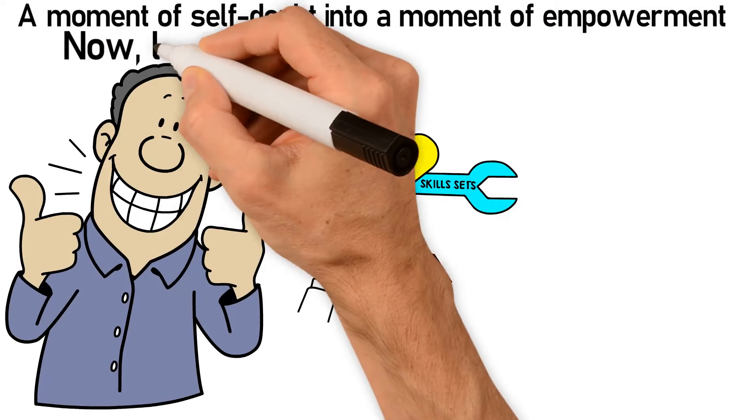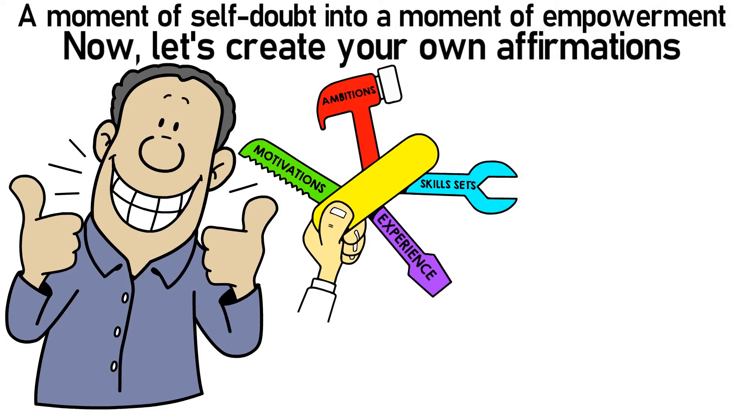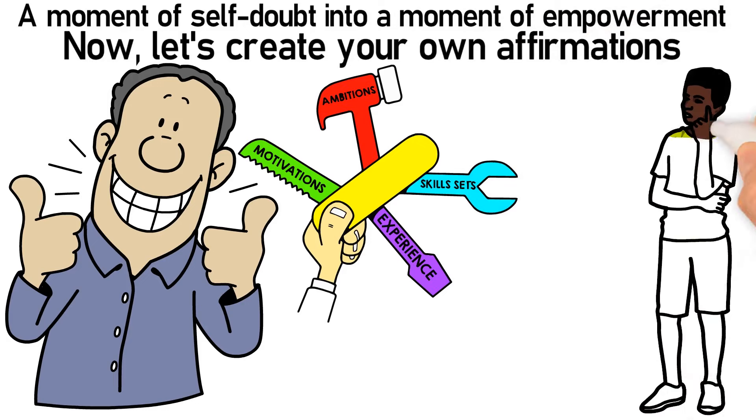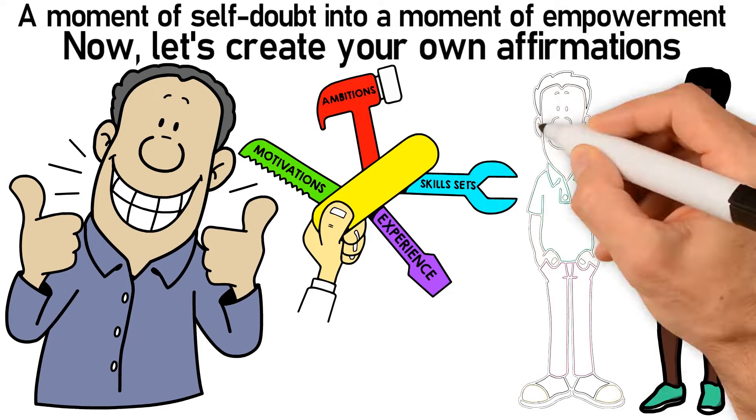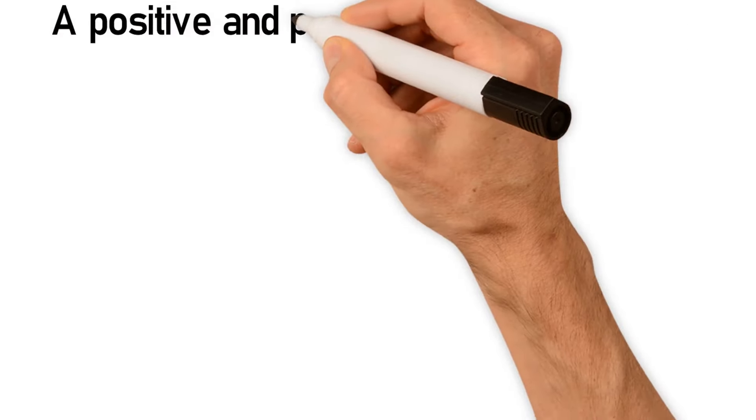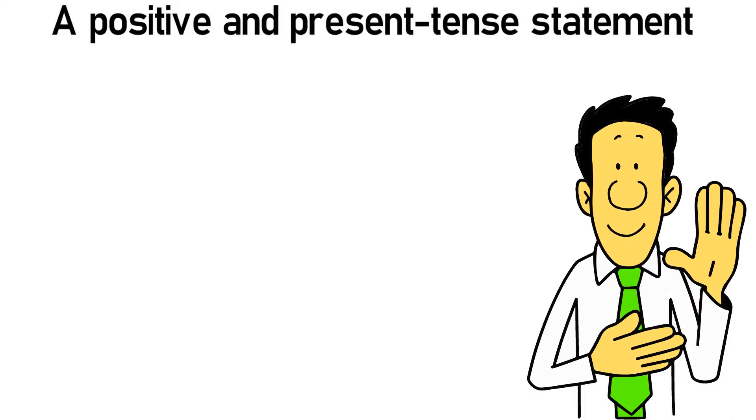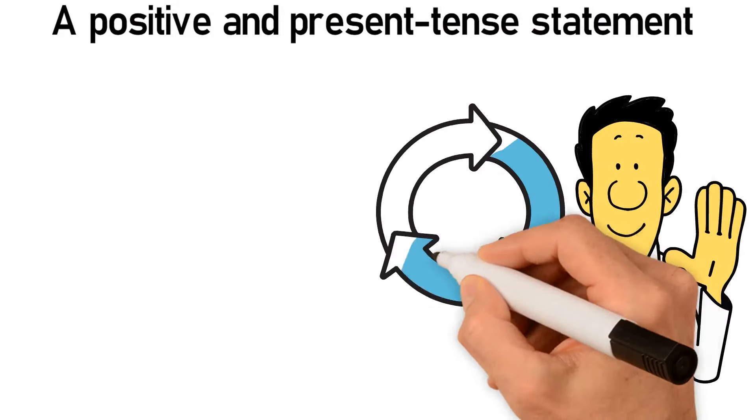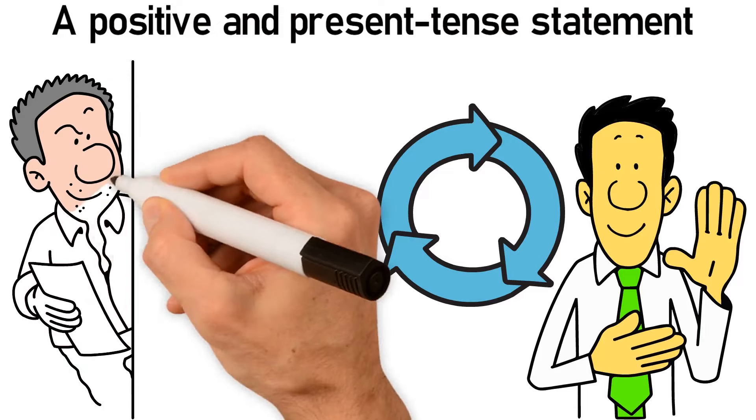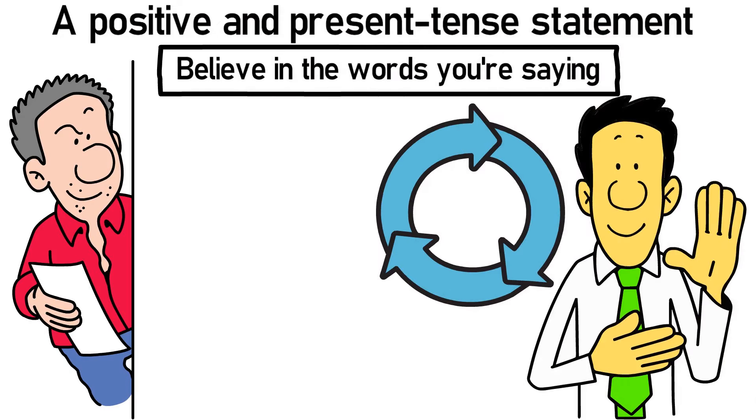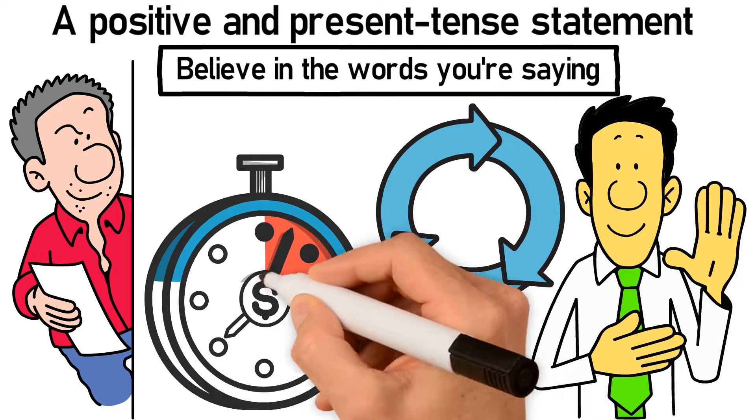Now let's create your own affirmations. Think about what you need most in your life right now. Start with 'I am' and follow it with a positive and present tense statement about what you wish to be true for yourself. Repeat your affirmations daily. Say them with emotion and conviction. Believe in the words you're saying and your subconscious will begin to accept them as truth.